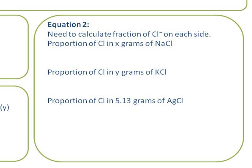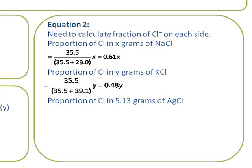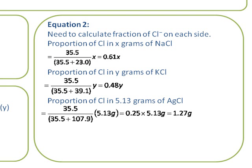The proportion of chloride in X grams of sodium chloride is the fraction of chloride in sodium chloride, so that's the atomic mass of chlorine, 35.5, divided by the molecular mass of sodium chloride (35.5 + 23.0), times the mass of sodium chloride X, giving 0.61X. I can do the same for potassium chloride: the atomic mass of chlorine divided by the molecular mass of potassium chloride (35.5 + 39.1), times the mass Y, giving 0.48Y. And the same for silver chloride, except this time I know the mass of silver chloride, so I'm multiplying my proportion by 5.13, giving 1.27 grams.